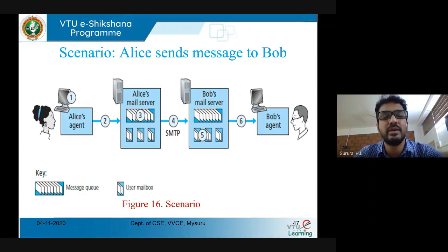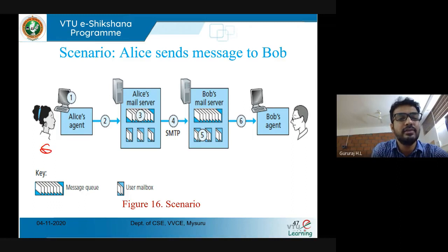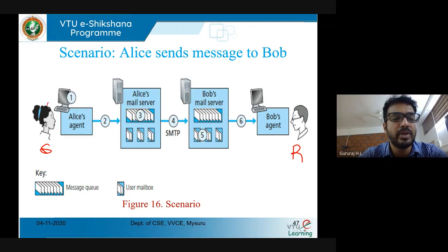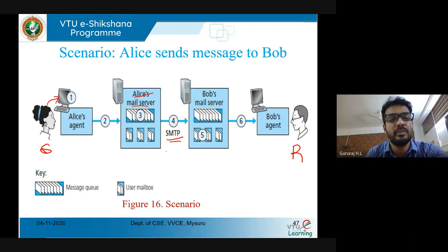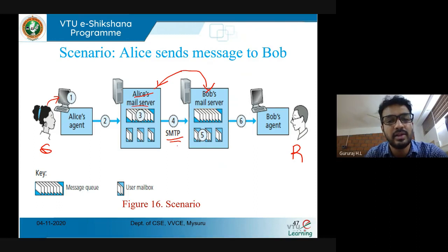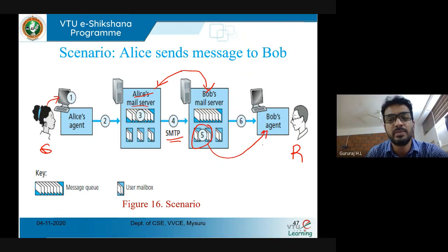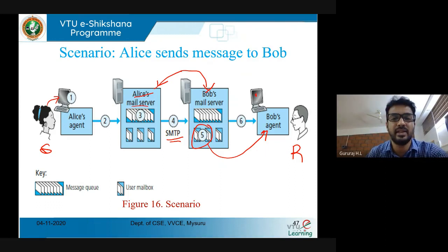Now let me look at a scenario of how email works between one mailbox and another. Consider Alice as the sender and Bob as the receiver. If Alice wants to send data, she uses her computer — her user agent — to send a mail through her mail server. The communication then uses SMTP protocol between Alice's mail server and Bob's mail server, and once the data reaches Bob's mail server, it is delivered to Bob's user agent and popped up in his mailbox.